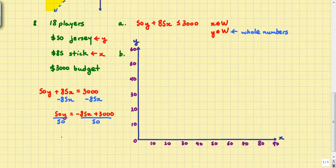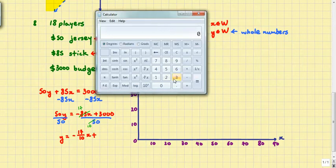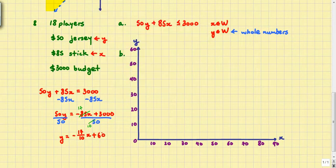So y is going to equal negative, let's reduce quickly, 17 over 10x. If you divide both 85 and 50 by 5, that's what you'll get. And 3000 divided by 50 would be 60. So that's the equation we should graph. Notice this time we do have less than or equal to, so we're going to draw a solid line and not a dotted line. Here's my y-intercept of (0, 60).